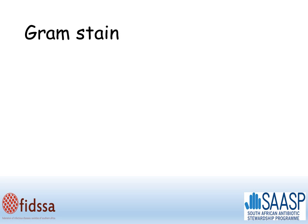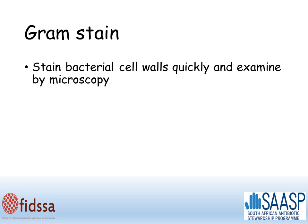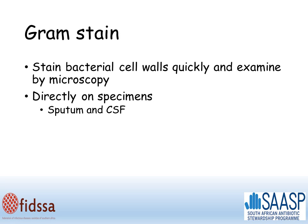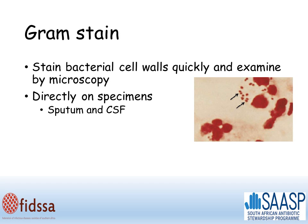The gram stain is an example of a test which is readily available in microbiology labs. It can be done quickly and provide important information for the prescriber. It's performed on a sample where first the bacterial cell walls are stained, then the sample is examined under a microscope. It can be performed directly on specimens such as sputum and CSF. This picture is an example of a gram stain of CSF showing gram-negative diplococci, suggestive of Neisseria meningitidis, therefore alerting the clinician to the possibility of meningococcal meningitis.